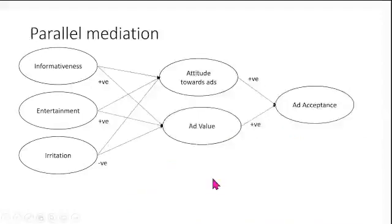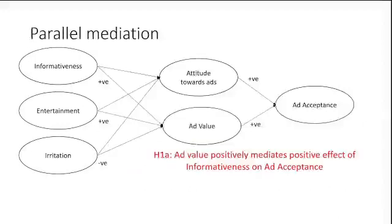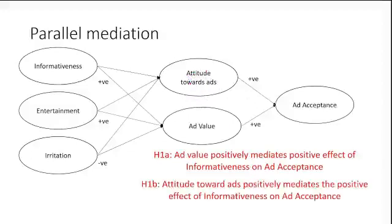Now let's move on to parallel mediation. Parallel mediation would be written in a simple way: we talk about how informativeness's relationship with ad acceptance is mediated by ad attitude, and then separately we talk about the mediation by ad value. There would be two different hypotheses, one for each mediator. Remember, we always write a complete hypothesis starting from the IV and moving towards the DV.